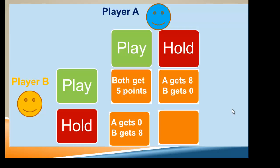If player A holds and player B plays, then A comes up with eight points and B gets zero. And if they both hold their card, they both get one.